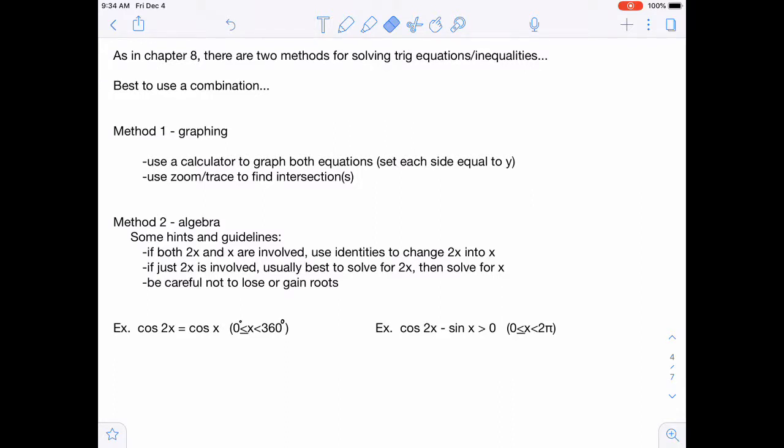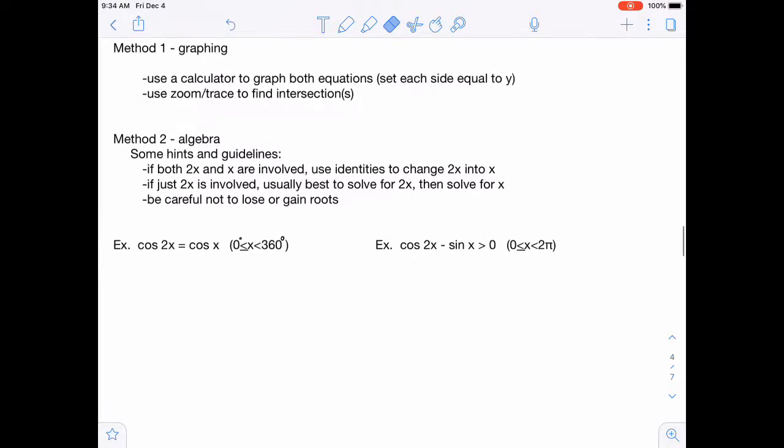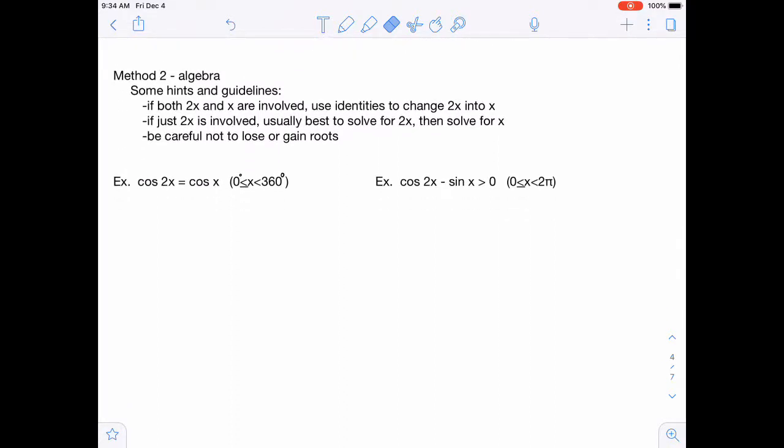So let's do a couple examples here. For this first one, we do have cosine 2x. And we have three different options to change that. And since we have a cosine on the other side, I'm going to choose the option that involves cosine. So I'm going to change that left-hand part into 2 cosine squared x minus 1.